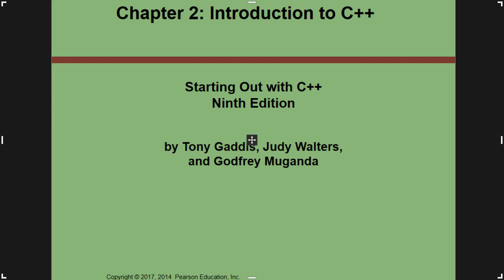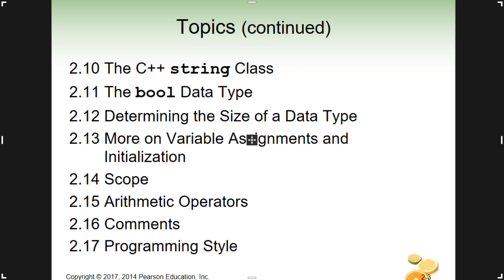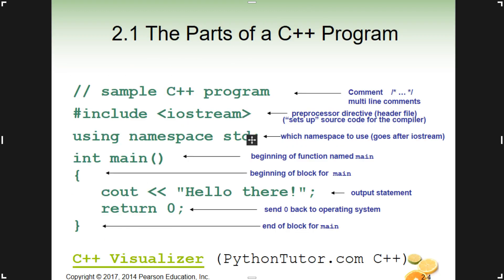Taking a look at Chapter 2, a little introduction to C++. In this video, we're only going to look at the first section because there's quite a lot in it. The parts of a C++ program — that's what we're going to do right now. We're going to start out with this block of code, a little sample program, and we'll talk about each one of these lines. Then we'll look at live code in a second.